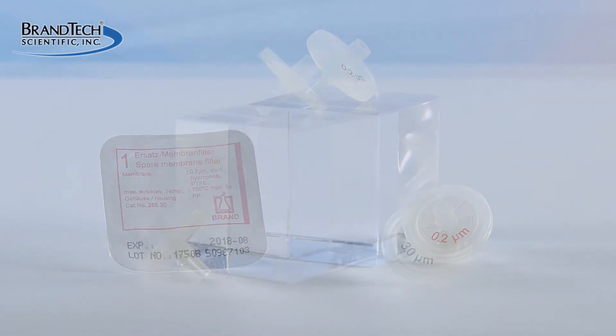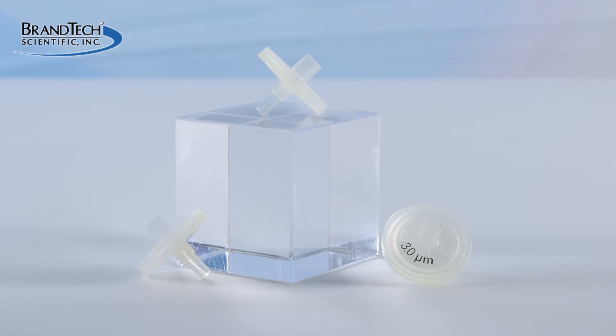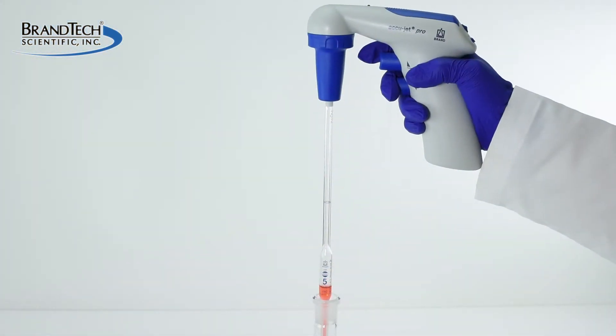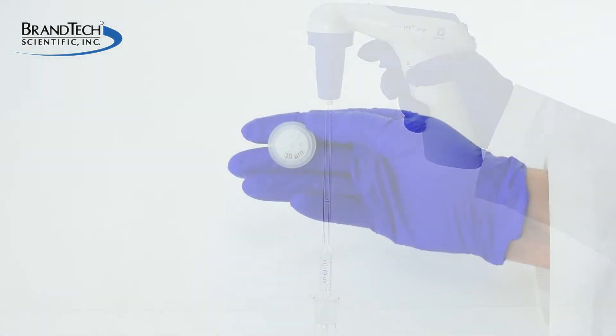If you are using an AccuJet to fill a Class A pipette, choose a 3 micron filter, which will allow for proper drain times.